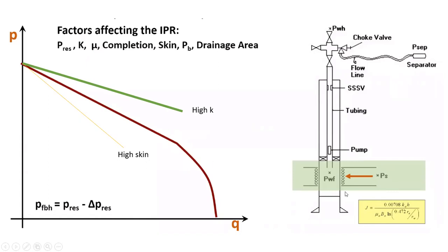If there is an increase in skin, PI will decrease. If the productivity index decreases, since slope is inversely proportional to PI, the slope is going to increase and the slope increases by the curve moving downward. For reservoir pressure, if the system is in static equilibrium, there is no flow from the reservoir to the wellbore — wellbore pressure equals reservoir pressure and flow rate is zero. This gives us the starting point of the IPR at the reservoir pressure. If reservoir pressure increases, the IPR shifts upward.